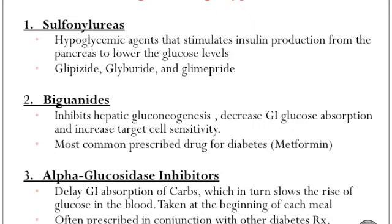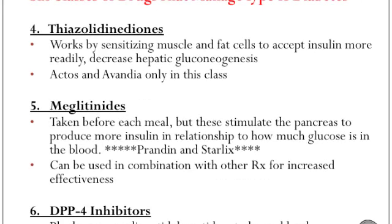The third class is alpha-glucosidase inhibitors. The mechanism of action is to delay GI absorption of carbohydrates and therefore slow down the rise of glucose in the bloodstream. This class of drugs is taken at the start of each meal and is often prescribed in conjunction with other diabetes medications. Examples include Precose and Glyset.